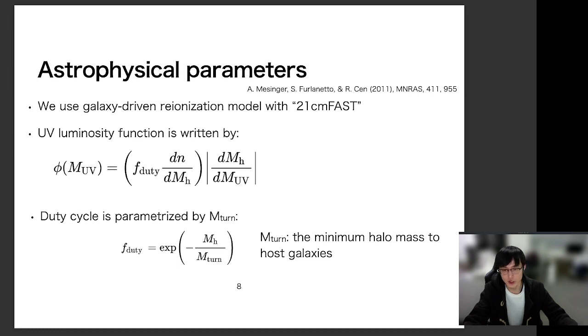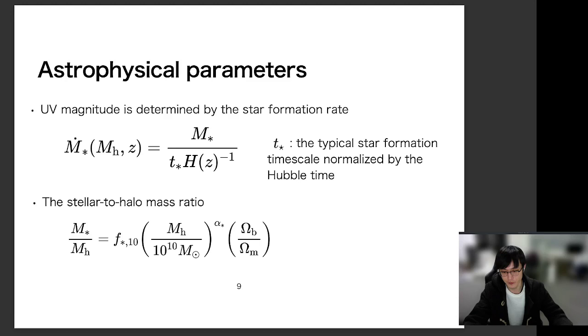the star formation becomes rapidly suppressed. So M_TAN is related to the UV luminosity function with respect to the turnover as this. And the UV luminosity function depends on the star formation rate as well. And in this model, star formation rate is simply calculated by the typical star formation timescale, parameter T_star. Additionally, star mass is calculated by the stellar to halo mass ratio.